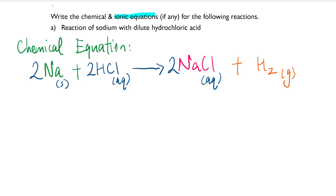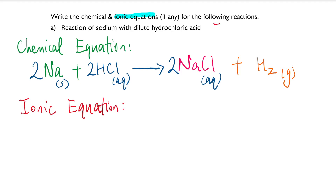Now let's talk about what exactly an ionic equation is. Just by the name, it obviously has to deal with ions. Ionic equations are mainly about ionic compounds — you'll see ions present there, with charges on top.